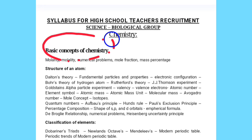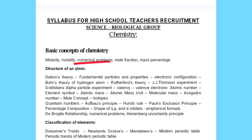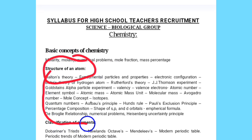The first unit is the basic concepts of chemistry — the concepts are given here. I am not going to explain in detail; you can take a screenshot, save it, and prepare accordingly. We will check the main unit names and compare with the GPSTR exam syllabus to identify what additional chapters have been added. The next unit is the structure of an atom, and this entire unit was there for the GPSTR exam.